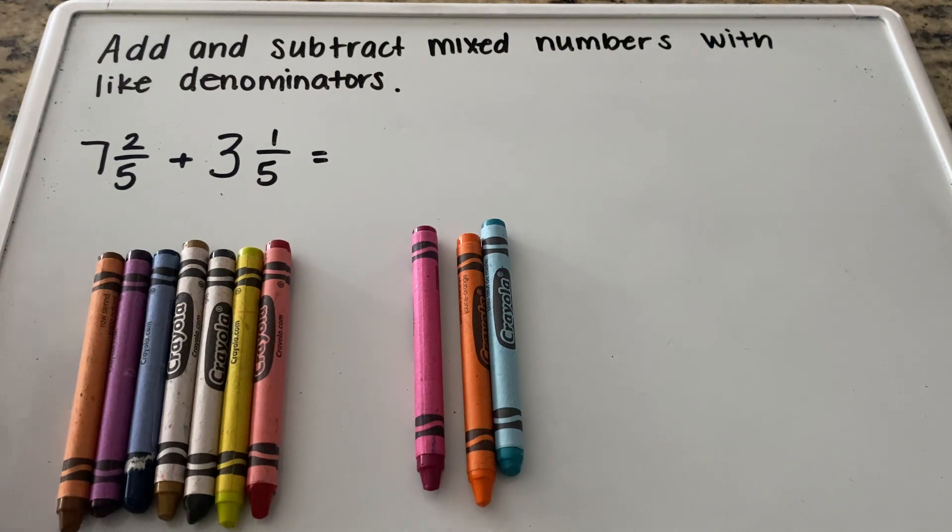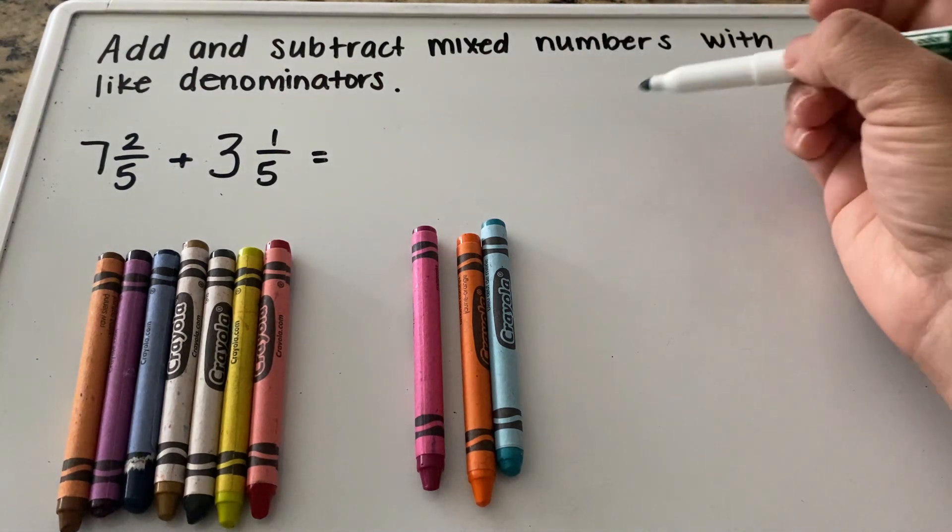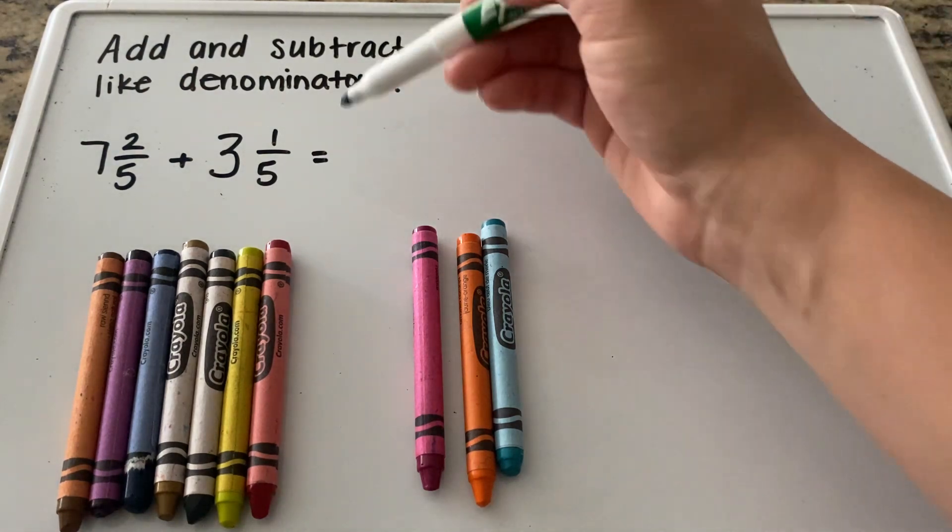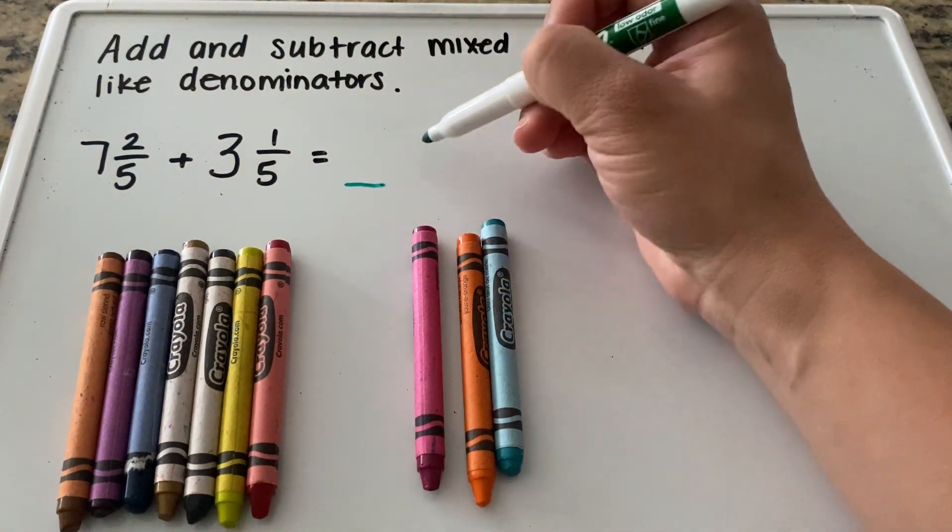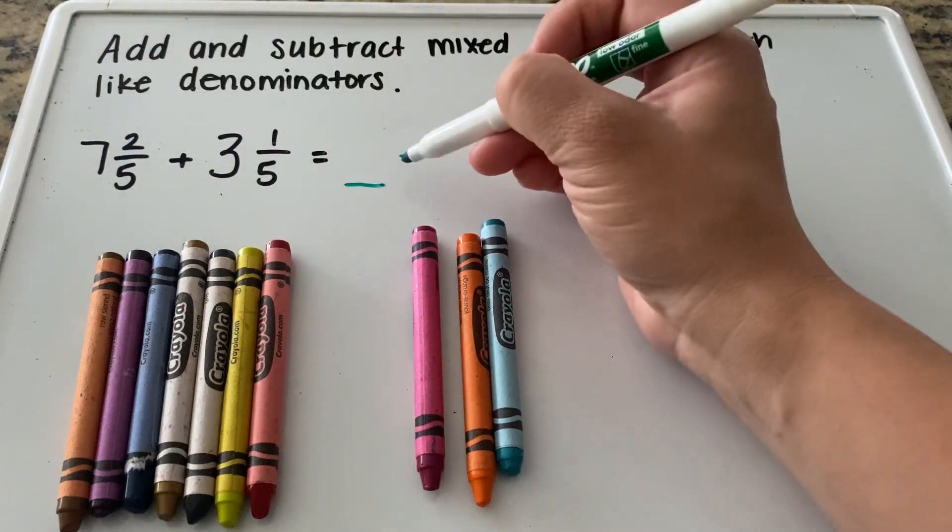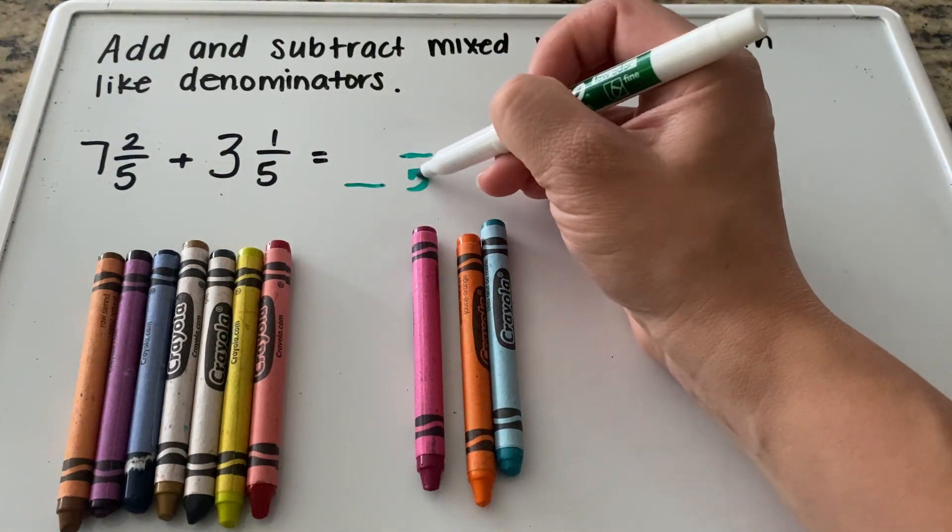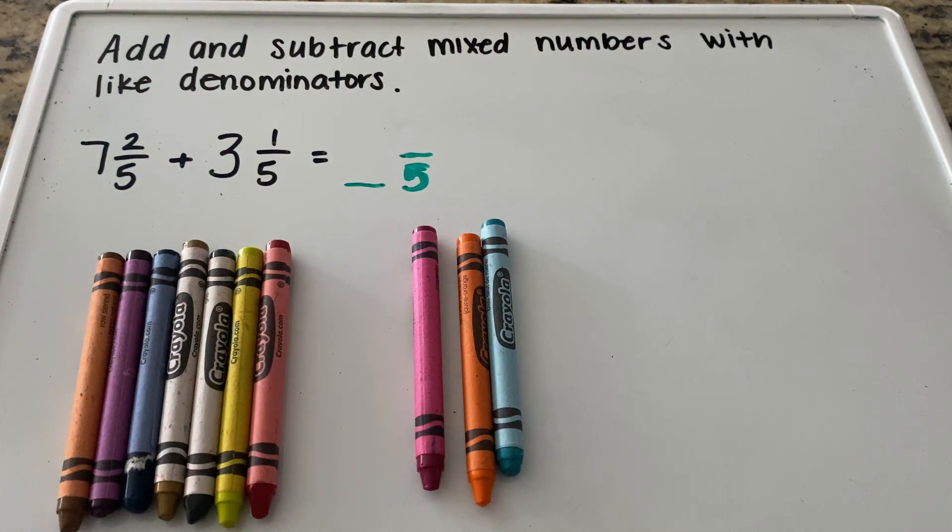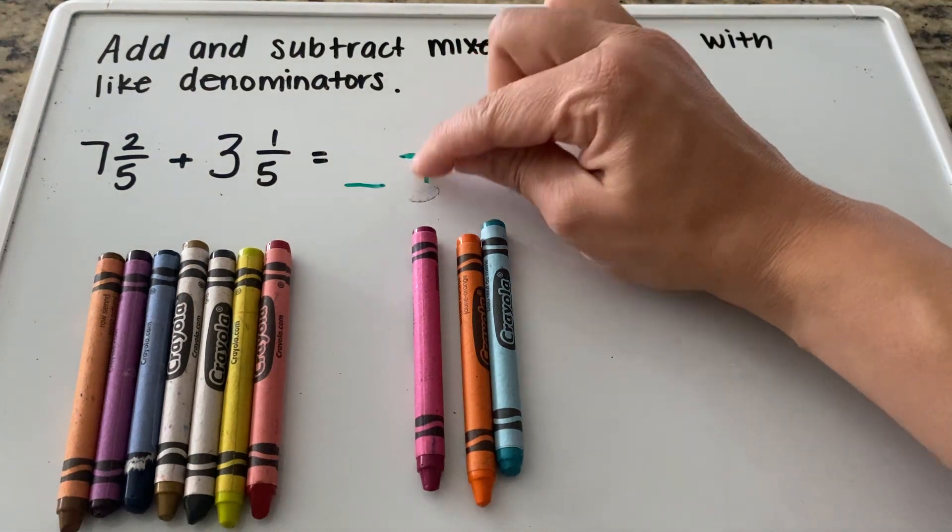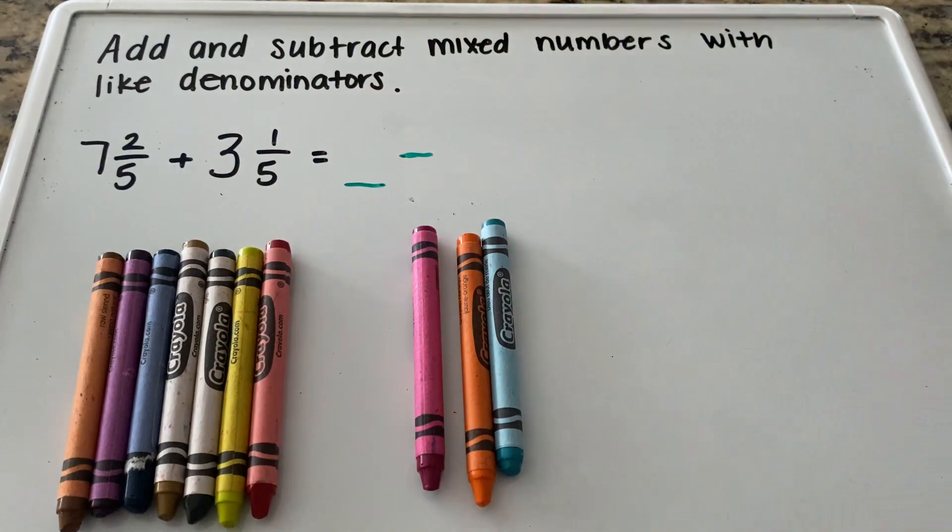I started with an addition problem. I have 7 and 2/5 plus 3 and 1/5. With this set we are working with like denominators. Within our answer we are going to get some whole number and then a fraction with the same like denominator. So no matter what, our denominator will be five. Now the question is, what is the whole number and what's our numerator answer going to be?